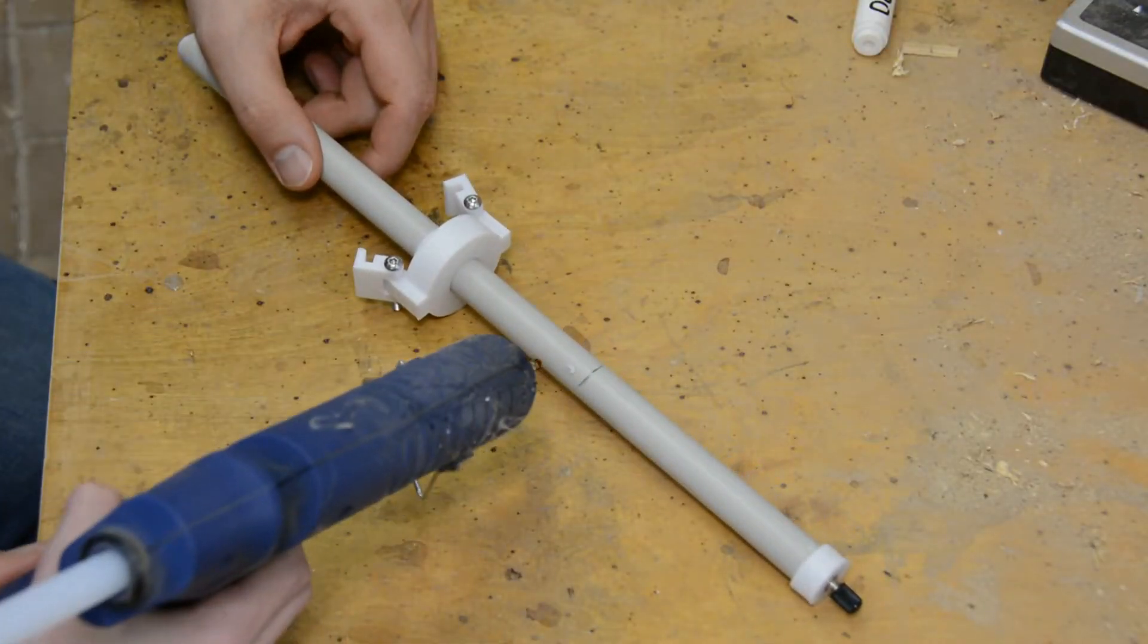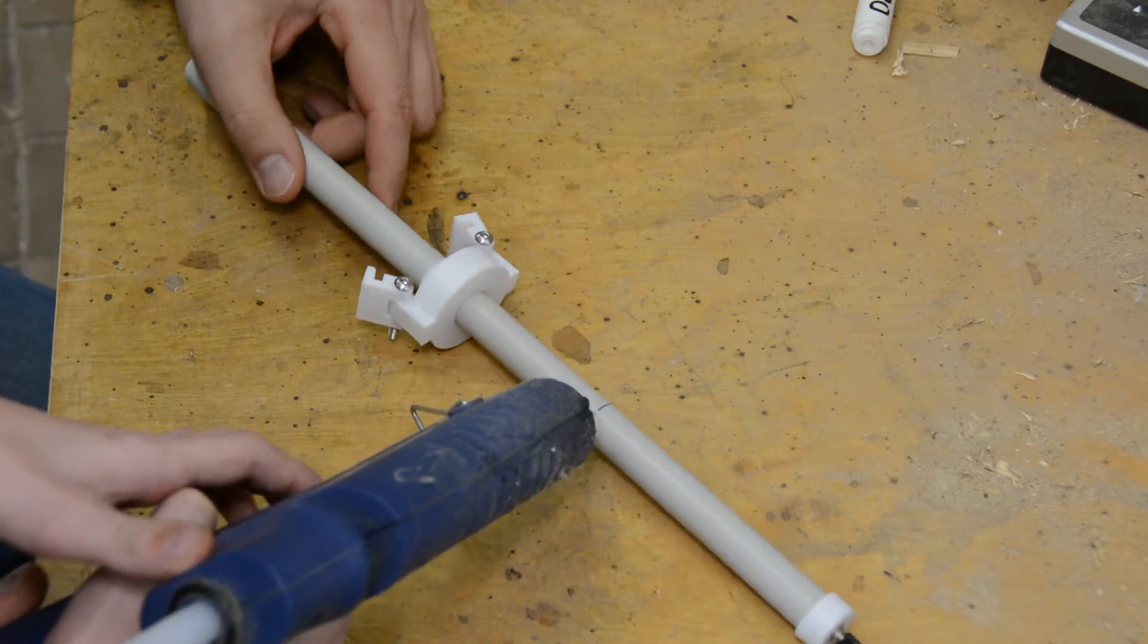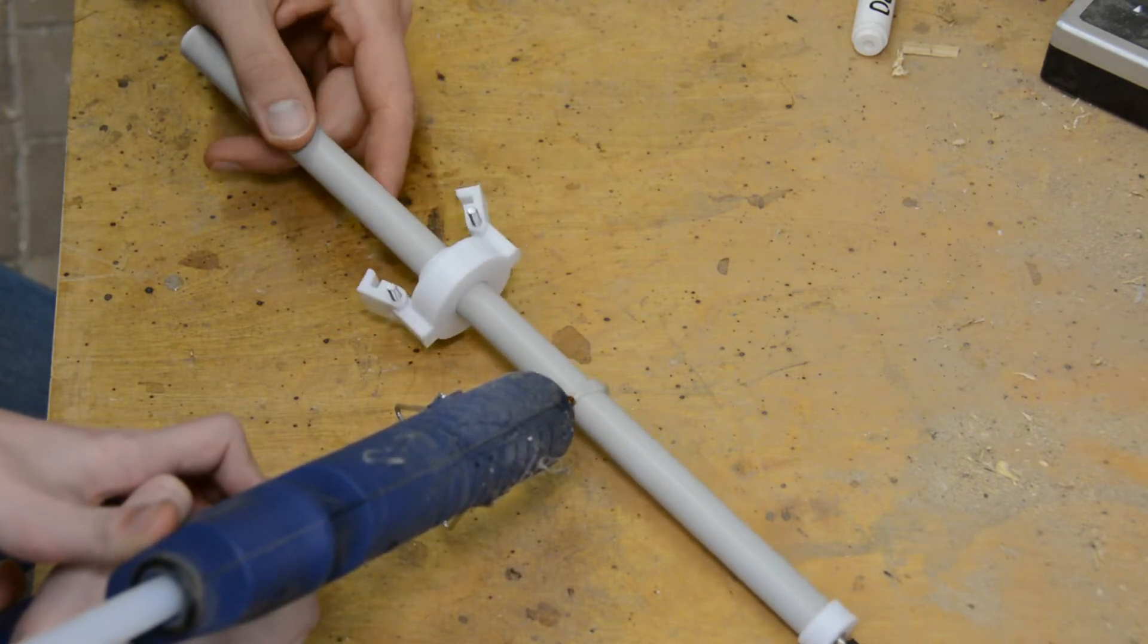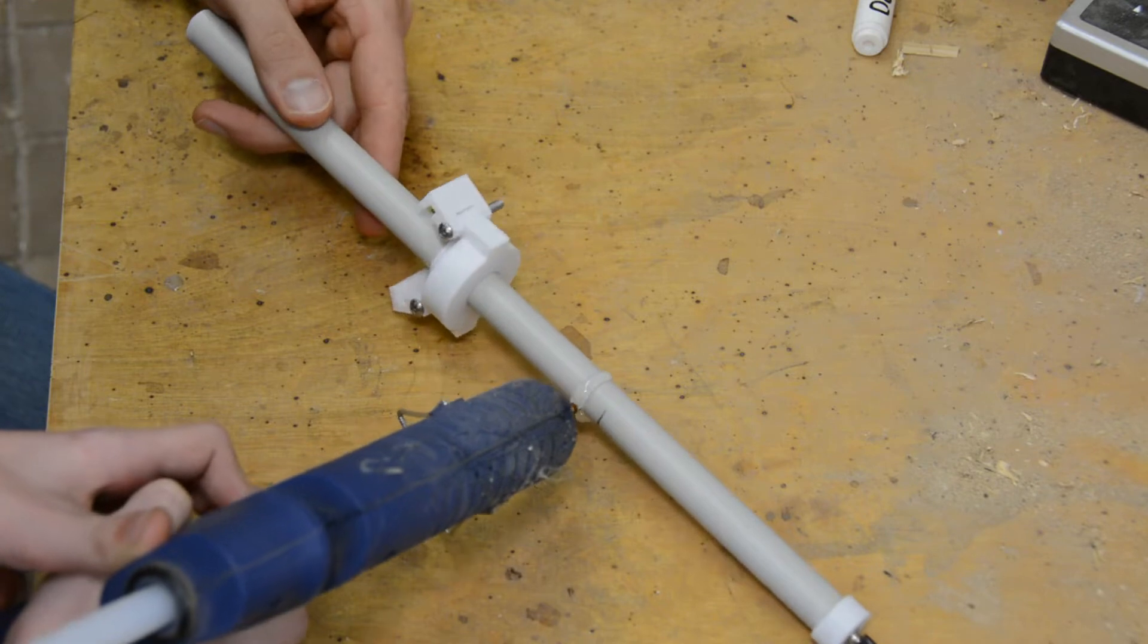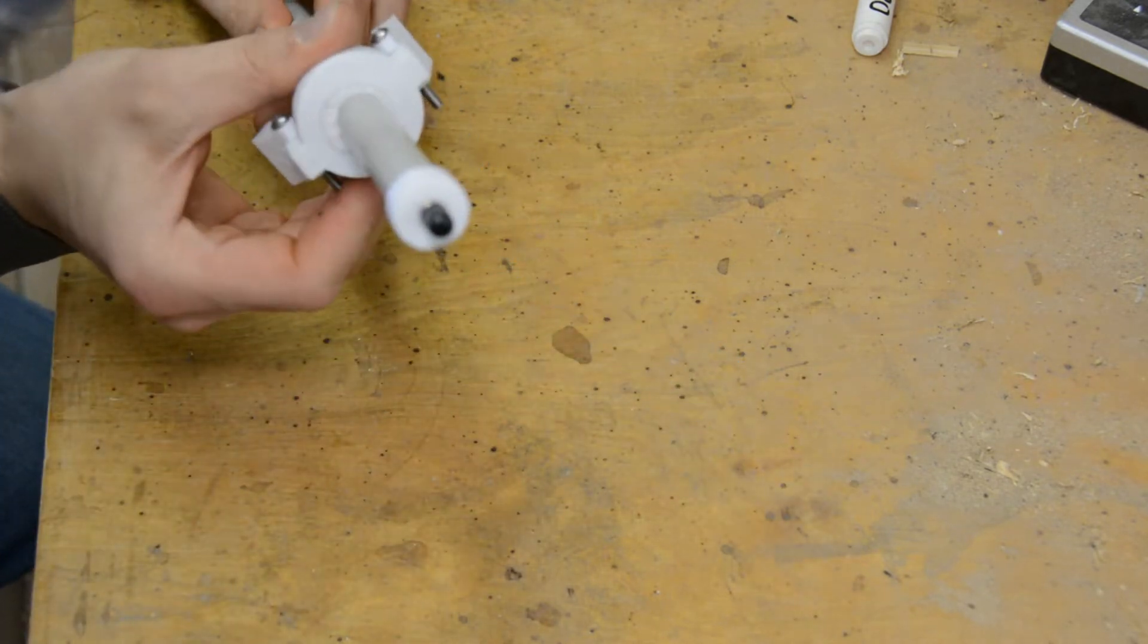If you don't have 10 screaming kids around you and you have some patience, epoxy or a glue used for PVC pipes creates a better seal, but in a hurry hot glue just works fine.